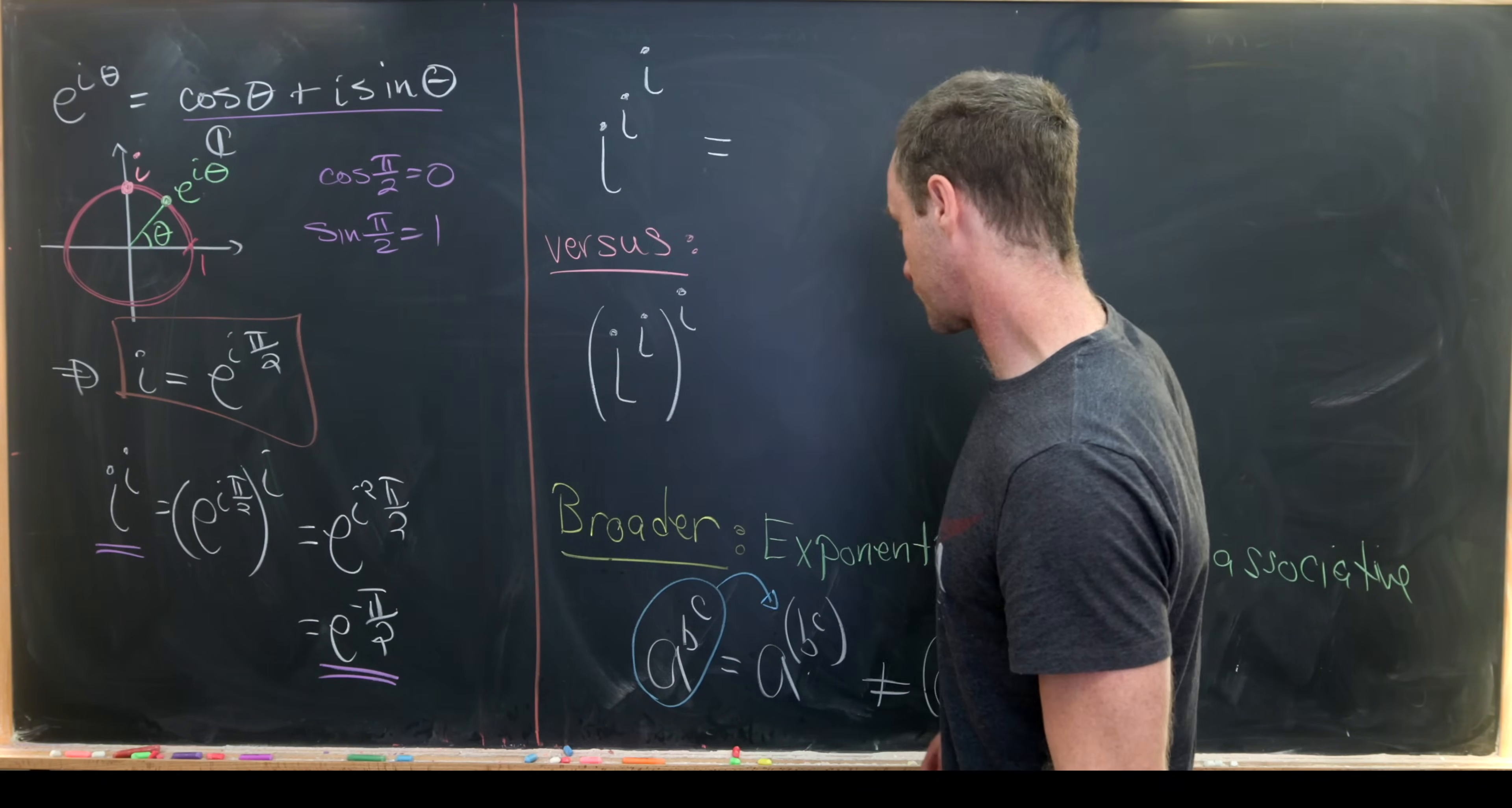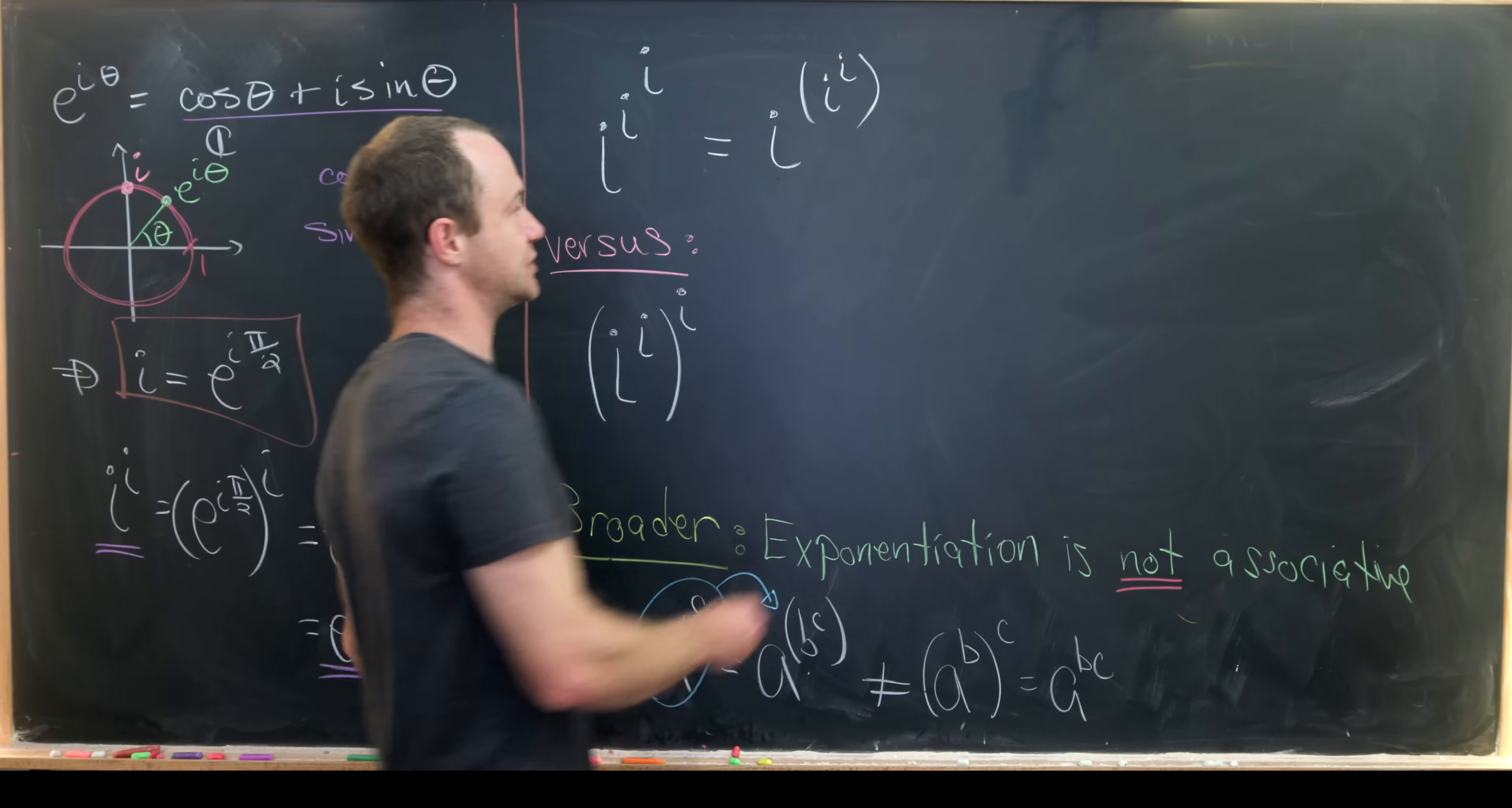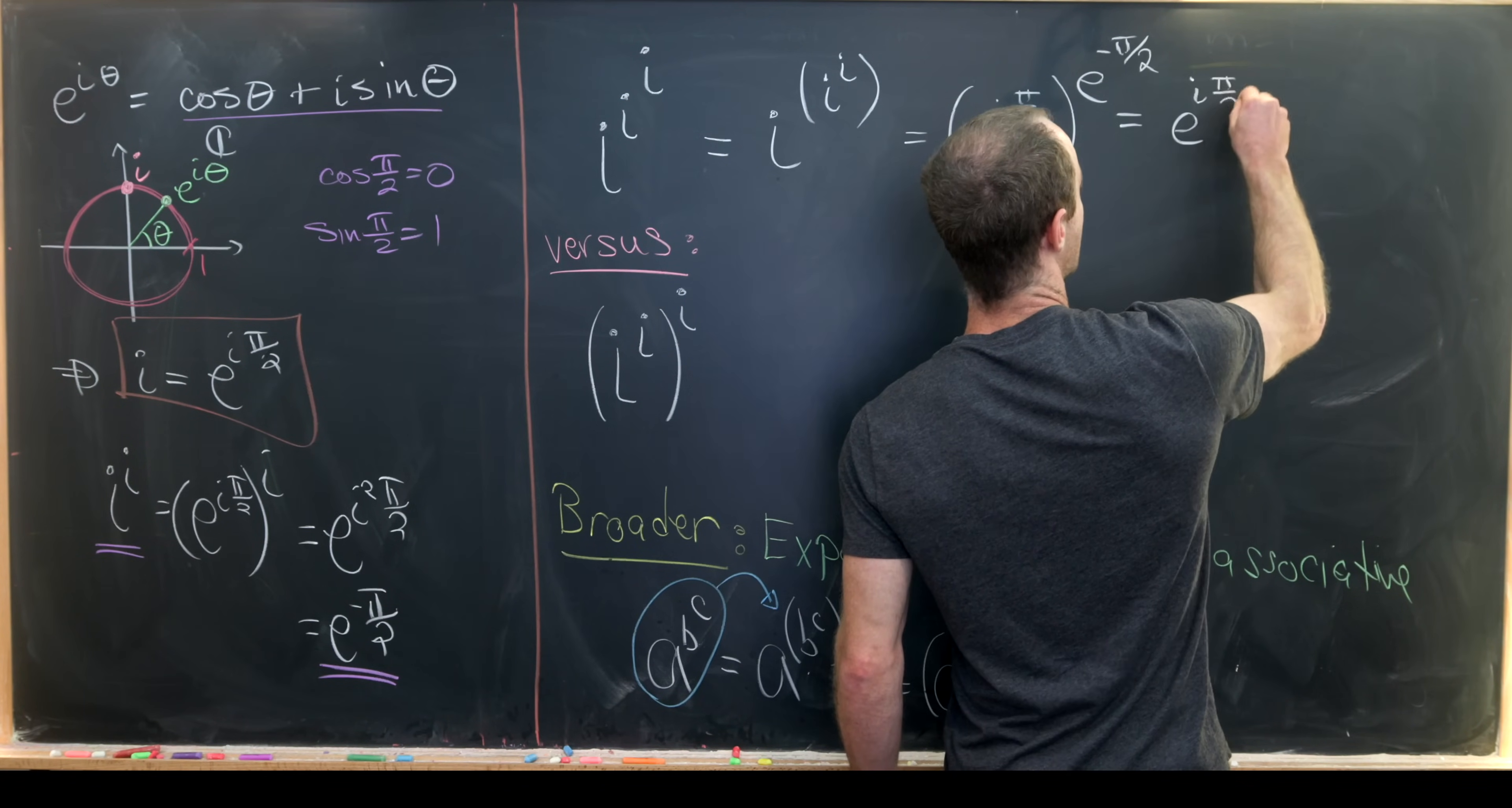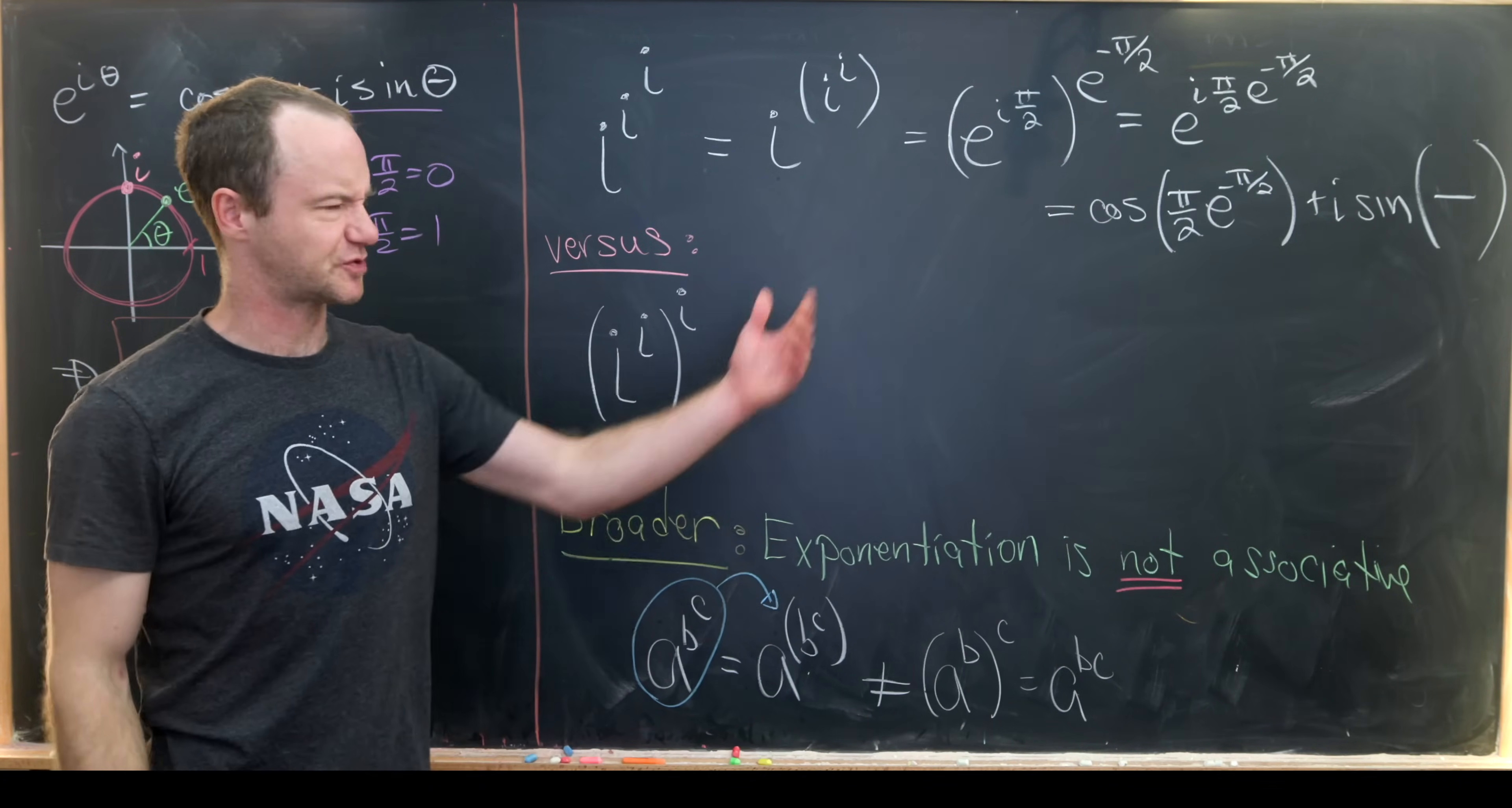So let's do this one first. Let's recall that in non-associative operations you assume that the parentheses are coming from the right, so this is really i to the power i to the i. But now we'll take this lower i and write it as e to the i pi over two, and this upper i to the i and write it as e to the minus pi over two. So that gives us e to the i pi over two, and that's all raised to the power e to the minus pi over two. Now we can apply exponent rules to that, and that'll give us e to the i pi over two times e to the minus pi over two. So that's really as simple as it gets. Maybe we could write it with cosines and sines if we wanted to, that would give us cosine of pi over two e to the minus pi over two plus i sine of the same thing.